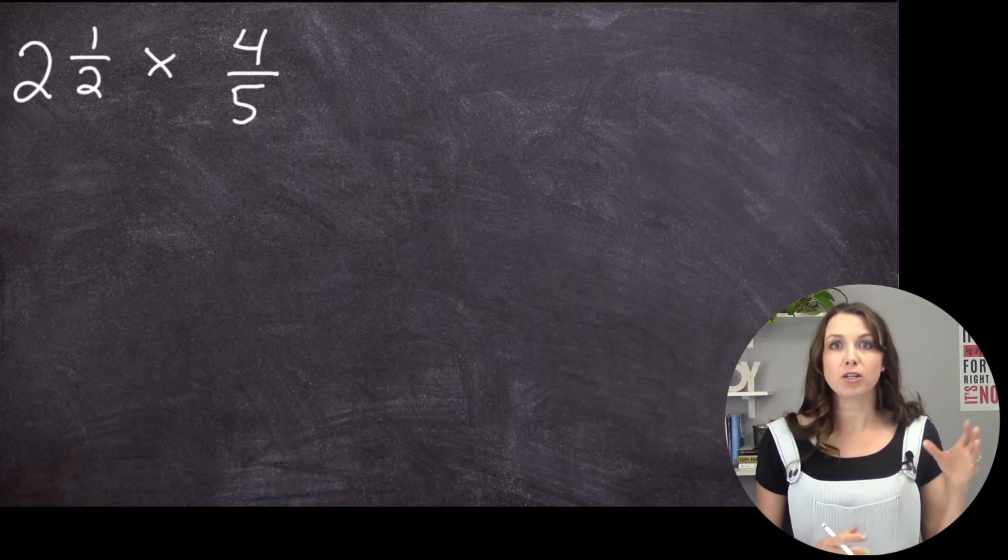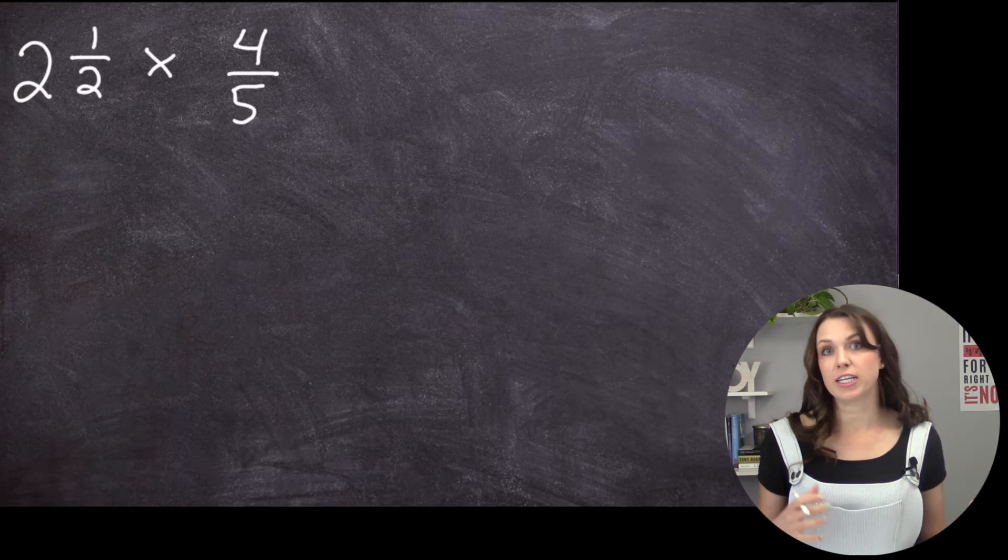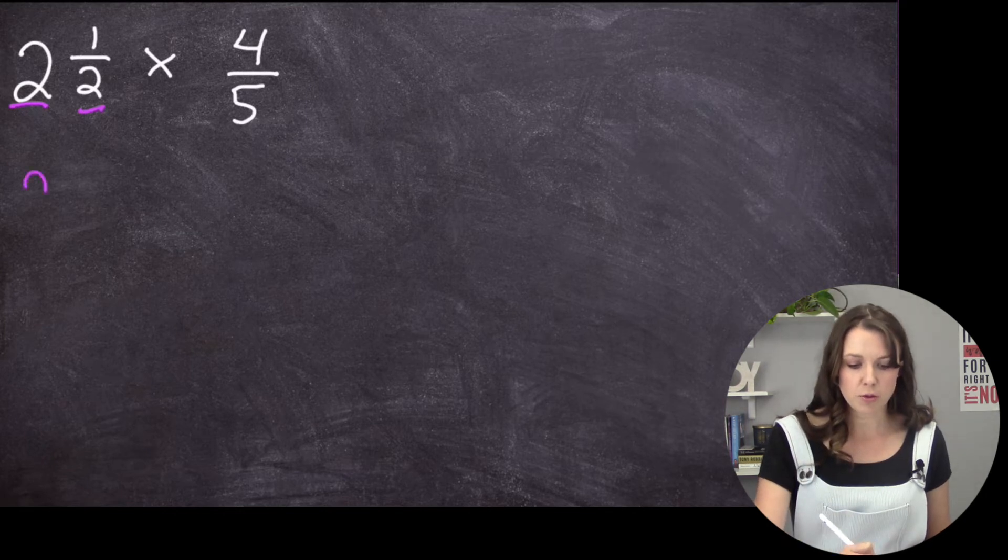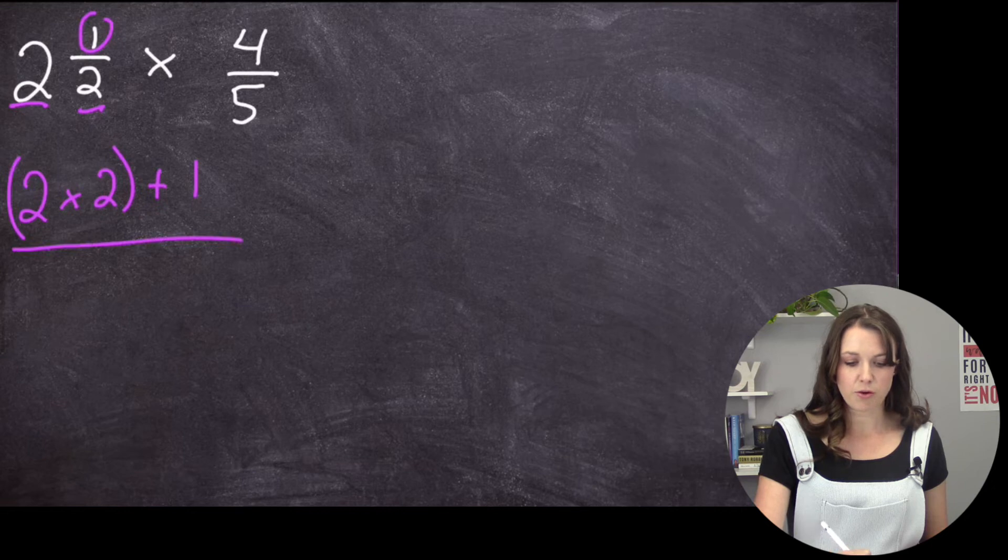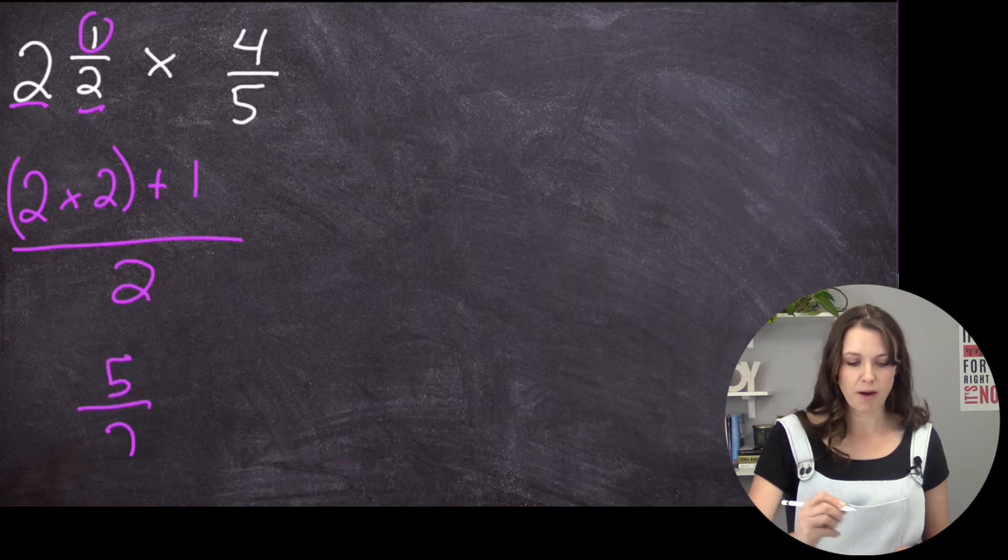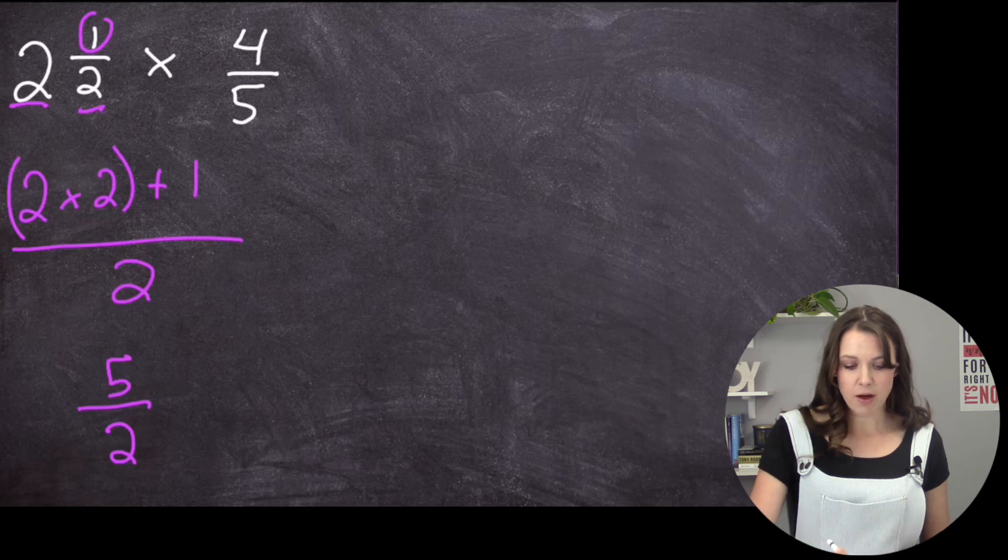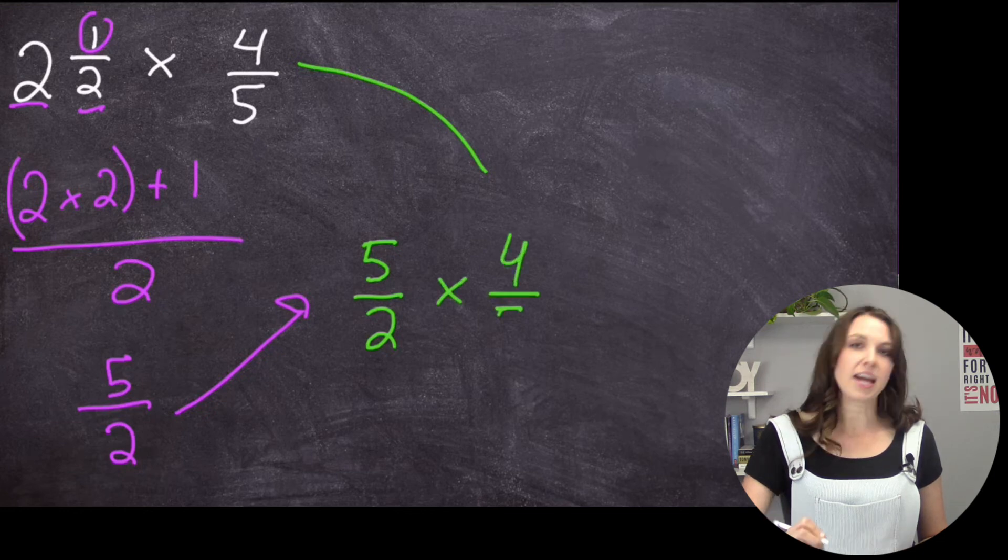So you can't actually multiply a mixed number, which is a whole number with a fraction, and a fraction. We need to take the mixed number and turn it into an improper fraction. Kind of the reverse of what we just did. So here I have 2, and I'm going to multiply it by 2, which is the number on the bottom. So I have 2 times 2 plus this one that I have right there. And then I'm going to throw it all on top of a 2. 2 times 2 is 4, and 4 plus 1 is 5. And then I keep my 2 on the bottom. So essentially, 2 and a half is the same as 5/2. Now I'm going to take that number and bring it right over here. So I have 5/2,